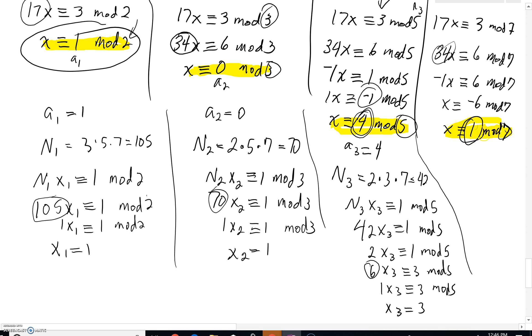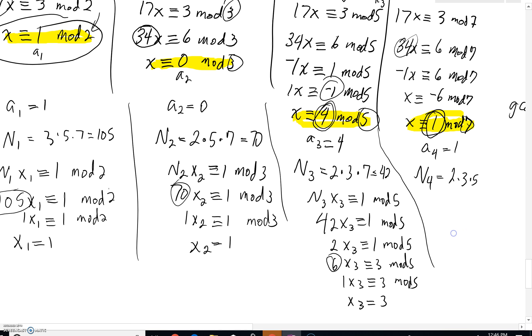Then, we're going to come over here. We've got our last congruence. Our a sub 4 would equal 1. n sub 4 would be all of these mods multiplied together. 2 times 3 times 5. Don't have this last mod of 7 there. And it doesn't take you too long to see that this is 30.